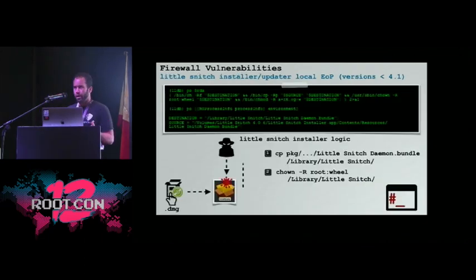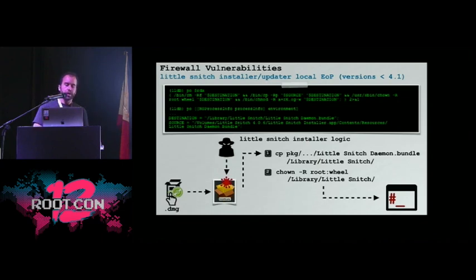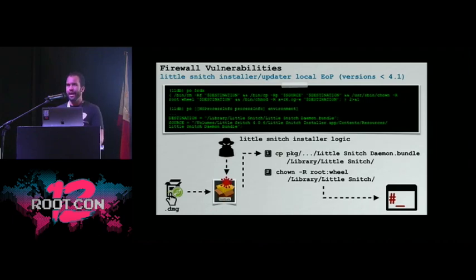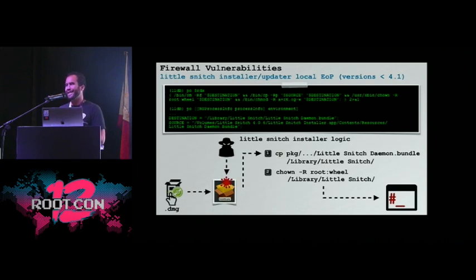Another issue I found also affected Little Snitch: its updater or installer does not fully validate the components it's installing or updating. A local unprivileged attacker can modify the components, and then the firewall installer will naively install and execute them as root without validating them. Basically, a local attacker can wait until the user updates the firewall and do a local man-in-the-middle to modify the downloaded files before the installer uses them. There's a large window of time, making this a very easy exploit — a great way for a local unprivileged attacker to get root privileges.